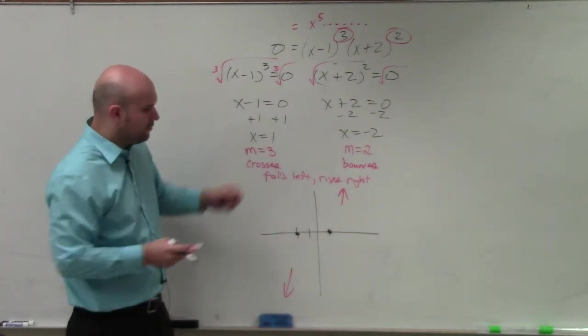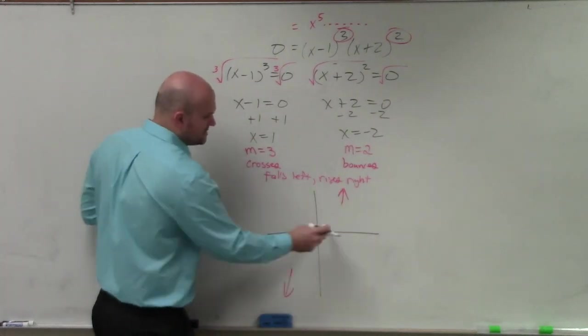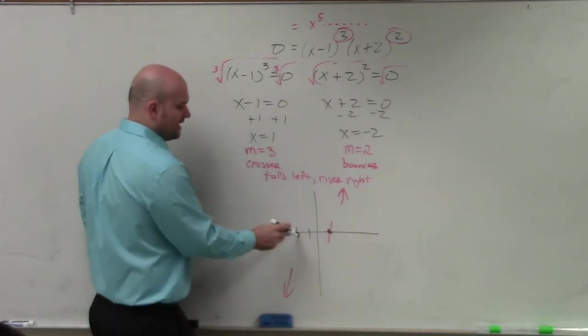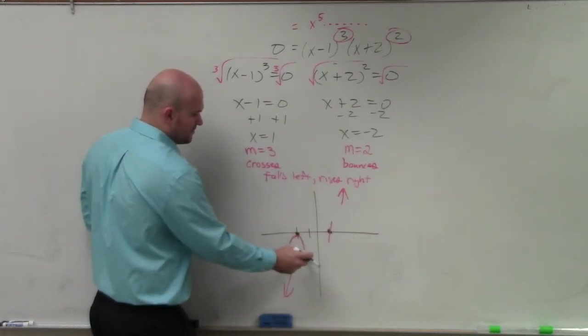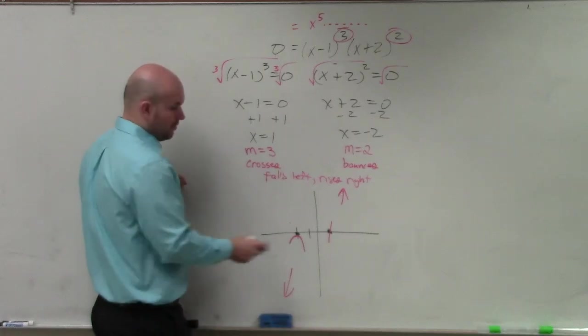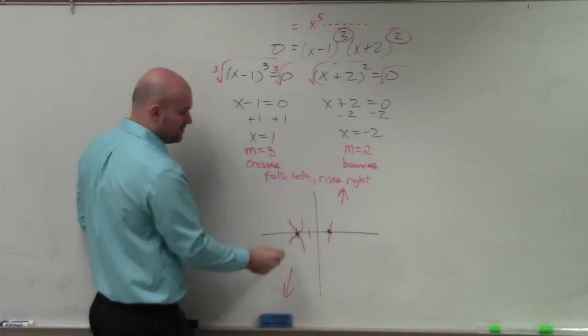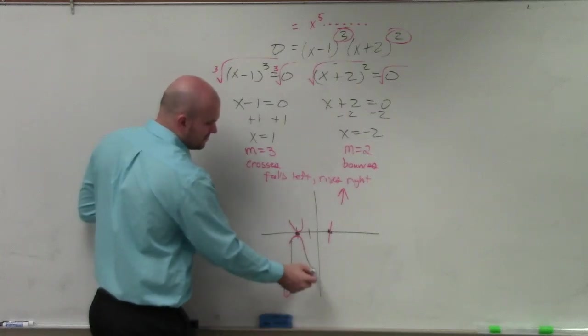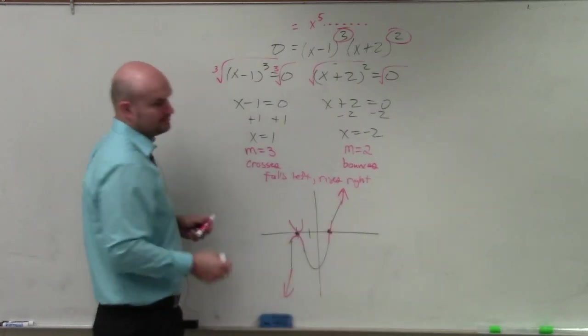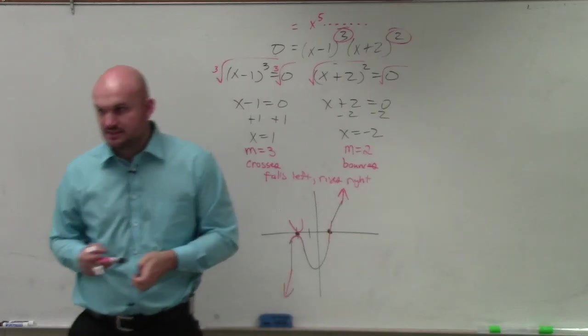What does the graph do at 1? It crosses. What does it do at negative 2? It bounces. Now just connect your two end behaviors. And that's it. Done.